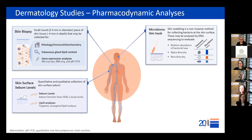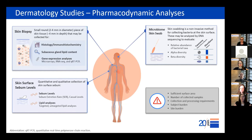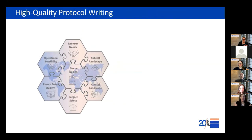When thinking about all these exploratory endpoints, we always have to consider feasibility. Does the patient have sufficient treated surface area to collect all these samples? For example, in a split-face design, it would be very challenging to collect sebum levels, sebum secretion rates, and microbiome swabs in a small treated area. We must also think about the subject experience — if a baseline visit is over six hours because of extra measurements, it won't be enticing for subjects to participate. And we have to think about how complicated it is for site staff to perform these special procedures and whether special equipment or conditions are required.